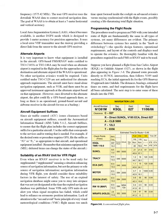Alternate airports. It is very important to know what equipment is installed in the aircraft. GPS-based FMS/RNAV units certified to TSO-C145A or TSO-C146A may be used when an alternate airport is required in the flight plan for the approaches at the destination and alternate airport if the WAAS is operational. No other navigation avionics would be required. Units certified under TSO-C129 are not authorized for alternate approach requirements.